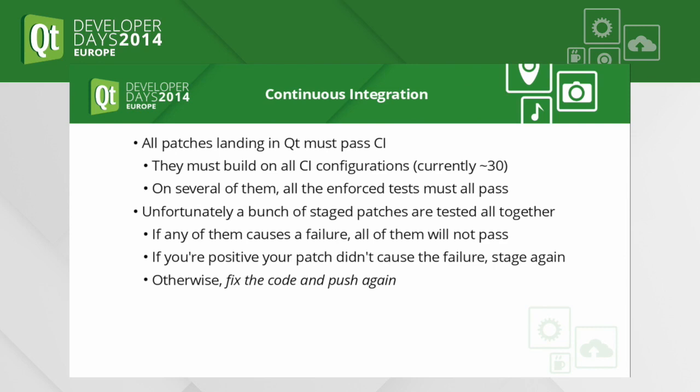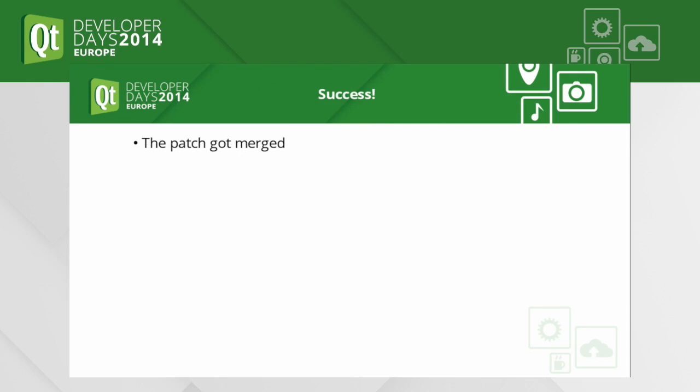Just put a drinking bird on the stage button. Otherwise if your test has failed, fix the code and push again. Luckily, in the end you get a merged patch and you become, finally, a Qt contributor.